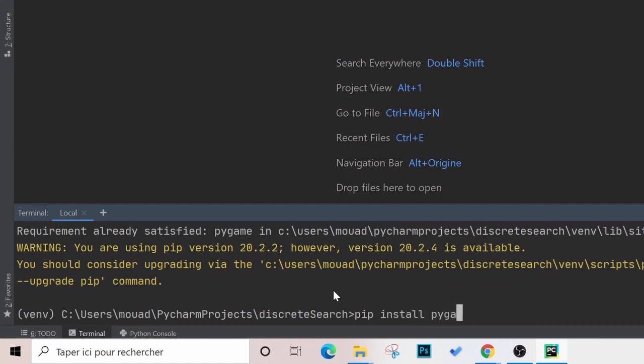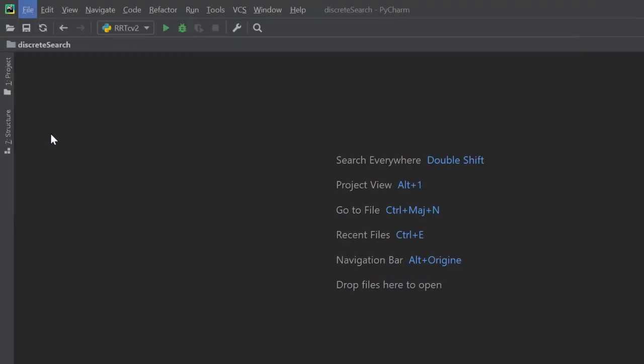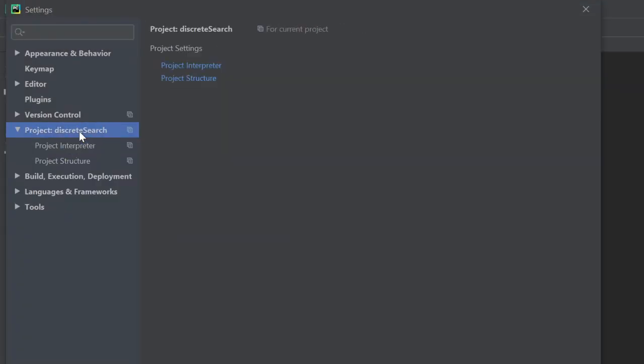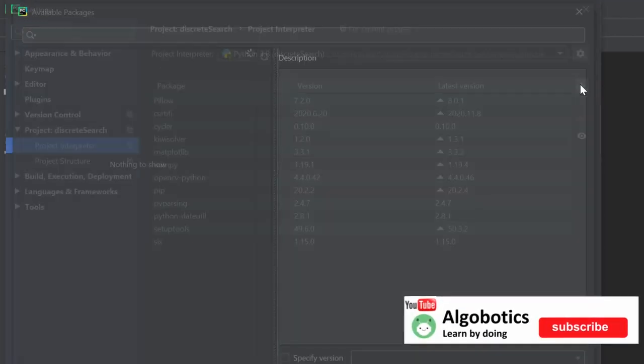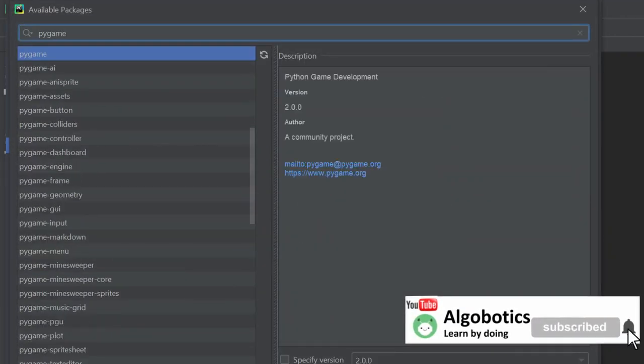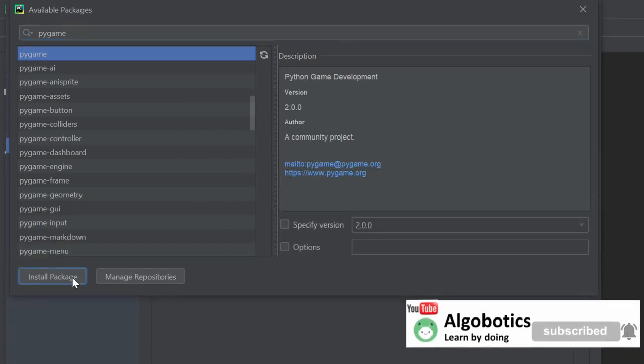If you are using PyCharm, then simply go to the settings, then project, then project interpreter. Then you click the plus sign on the side here and type pygame in the search bar and install it.